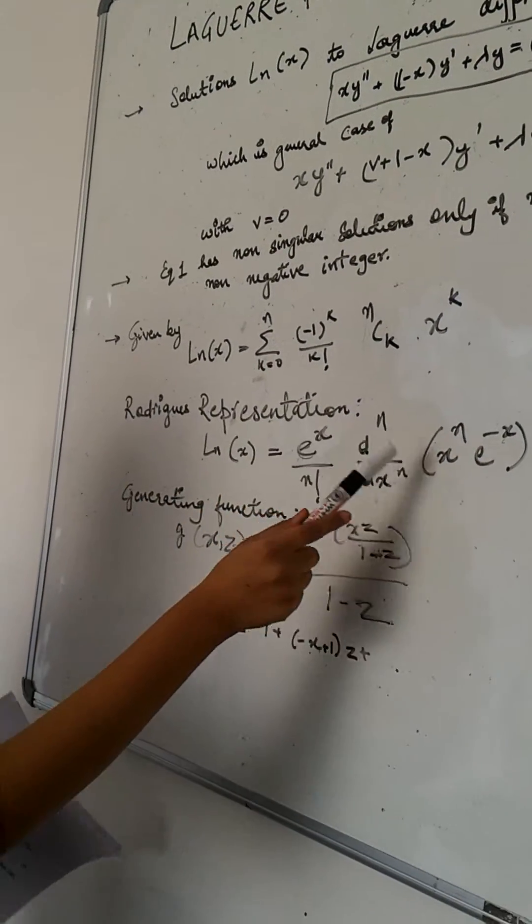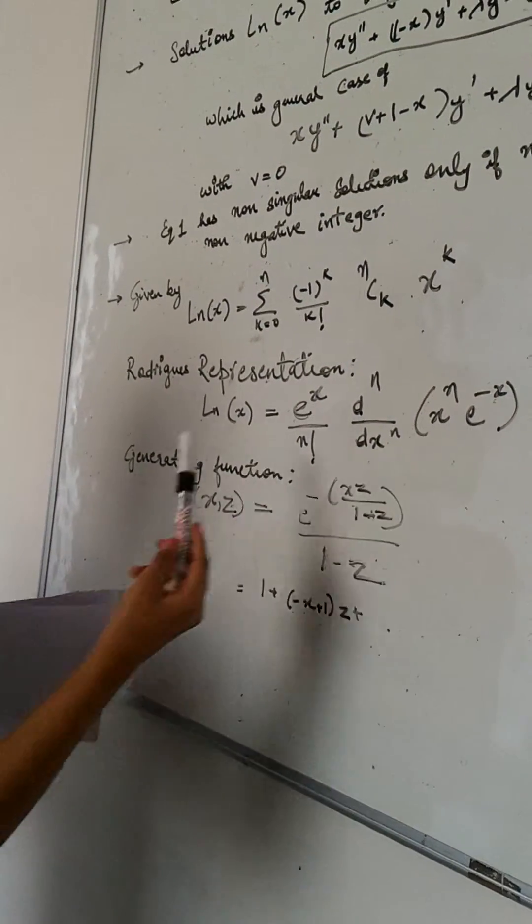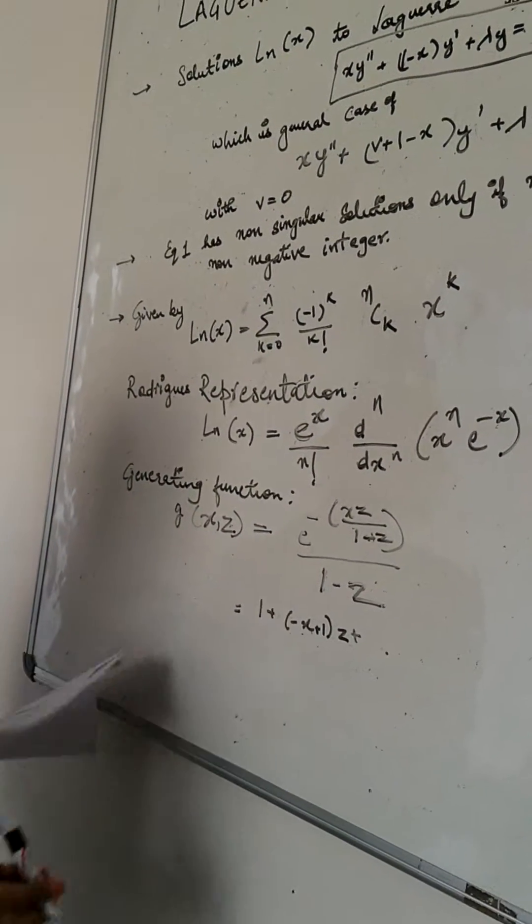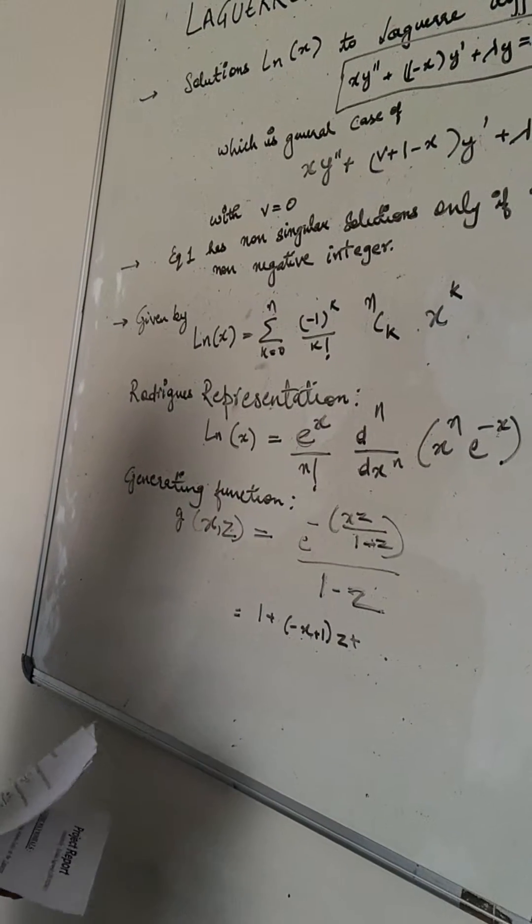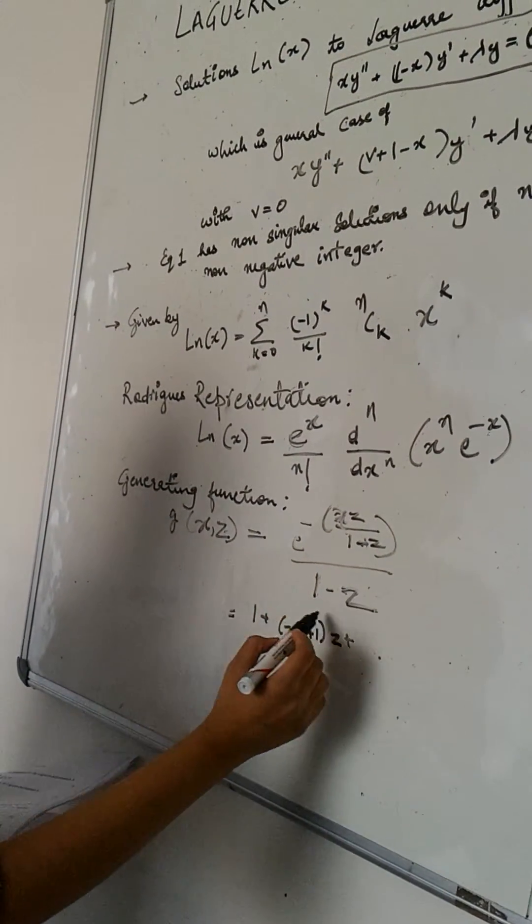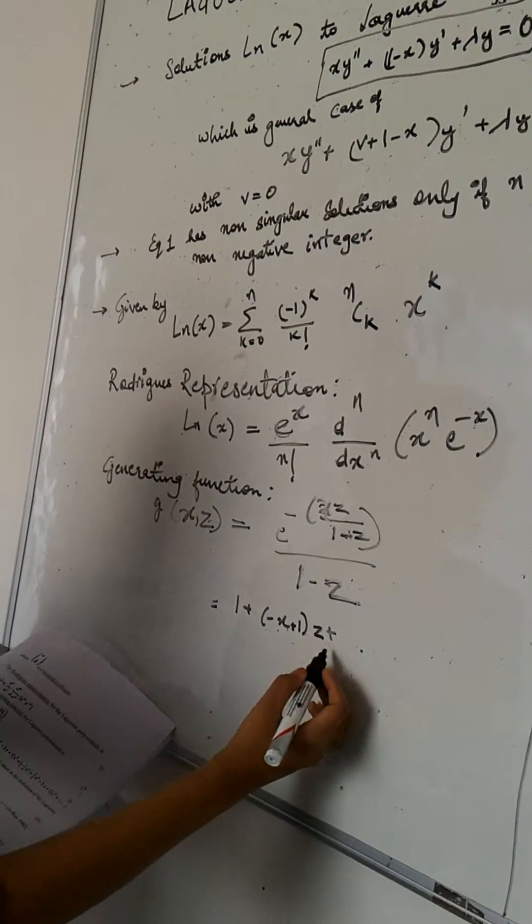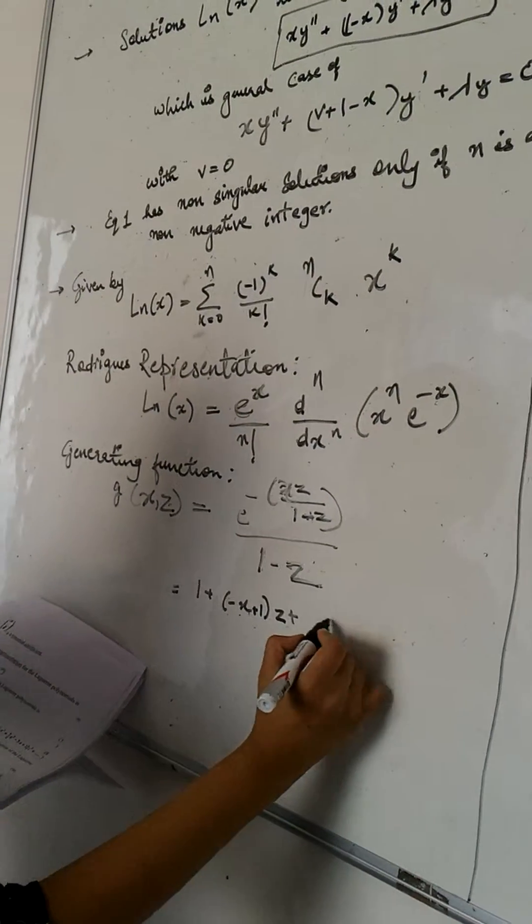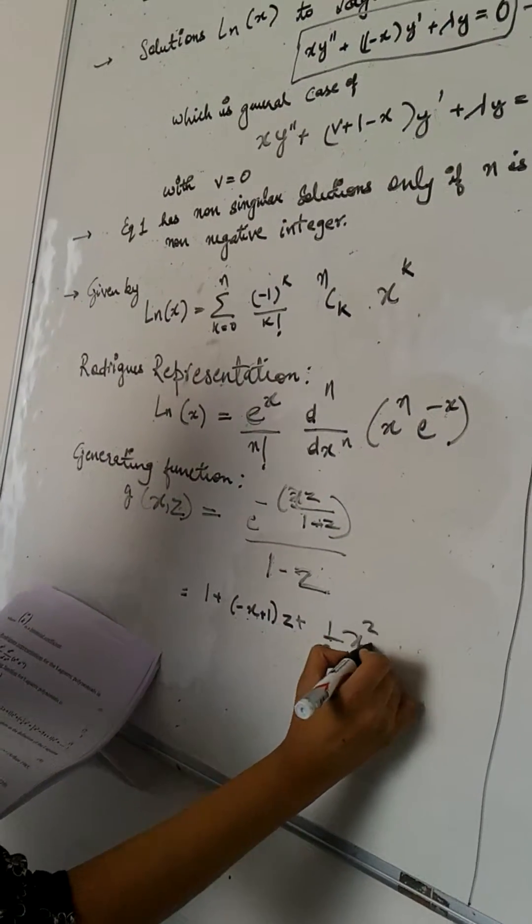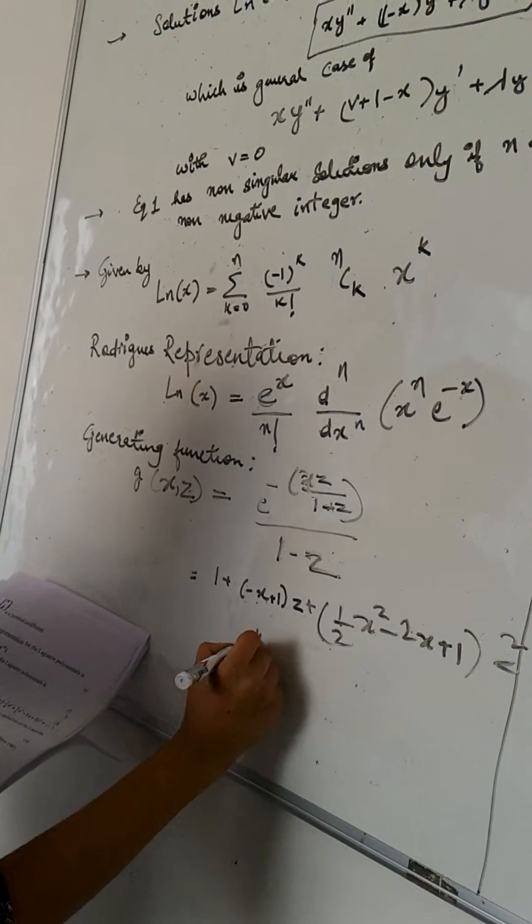The radical representation of this polynomials are as follows. And the generating function for this is g(x,z) equals to e^(-xz) divided by (1-z). Which will basically come out to be 1 + (-x+1)z + (1/2)(x²-2x+1)z² and so on.